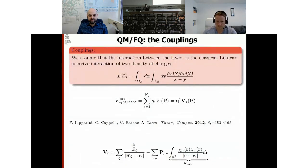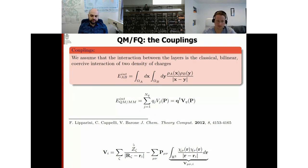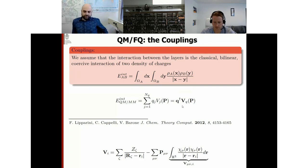We couple this force field with the QM Hamiltonian — we generally use the DFT Hamiltonian, but this can potentially be coupled to any Hamiltonian. The problem then reduces to defining the interaction term: for FQ, this is a term depending on the potential of the QM system, which depends on the density matrix, and on the fluctuating charges placed on the MM atoms. Once defined, you have your effective Hamiltonian.